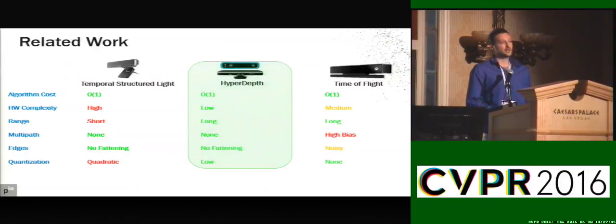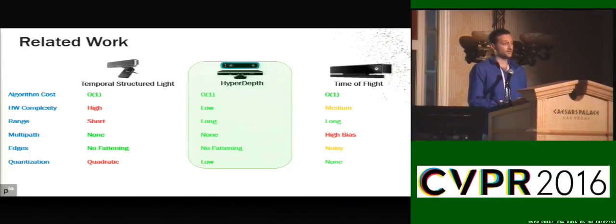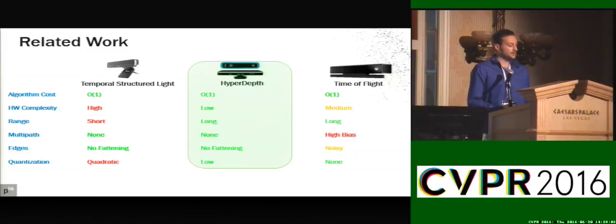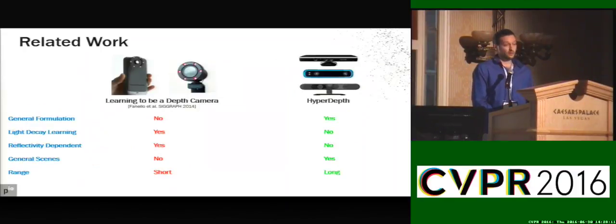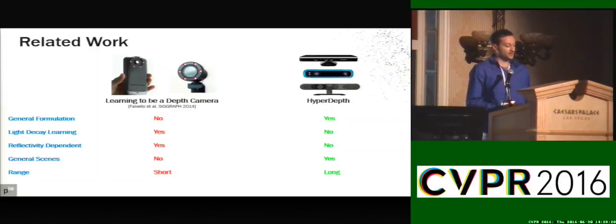With HyperDepth, we want to completely change the way stereo matching is done. We cast the stereo matching problem into a classification and regression task, delivering an O(1) algorithm capable of achieving very high accuracy compared to any technology available. We have long range, we solve problems such as quantization, and the algorithm runs at 1000 frames per second. Comparing with our previous work, 'Learning to Be a Depth Camera' was designed for specific scenarios involving only hands and faces, was reflectivity dependent, and had very short range. With HyperDepth, we don't have any of those problems.